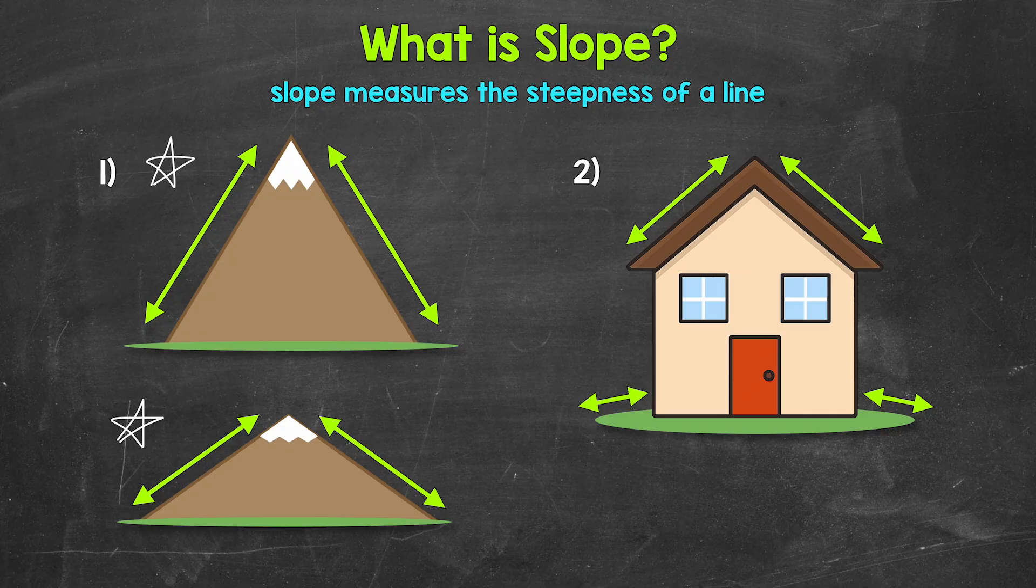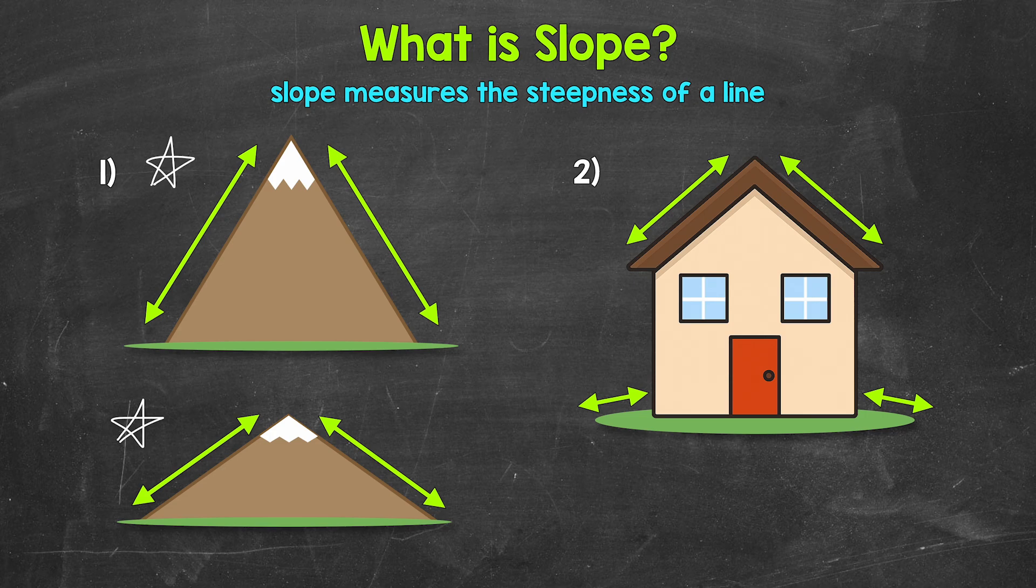Think about climbing the top mountain compared to the bottom. Let's say you go up three feet for every one foot forward for the top mountain, and then only two feet up for every one foot forward for the bottom mountain. That makes sense because we can see that the top mountain is steeper. And this is what slope is all about. Slope measures steepness by comparing vertical change to horizontal change.